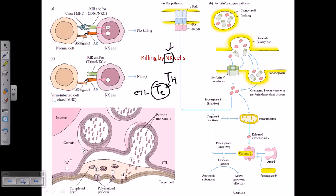NK cells move through the bloodstream and tissues, wandering around. When they engage with cells, they can receive positive or negative signals. They look for two important interactions: one with the class 1 MHC molecule expressed on the normal cell, and another via the activating receptor (AR) ligand also expressed on the normal cell surface.